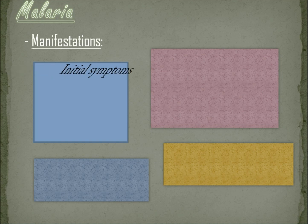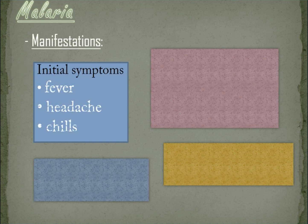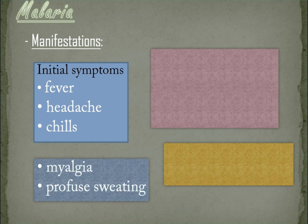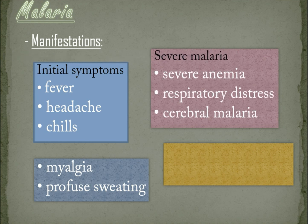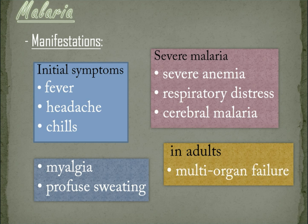Signs and symptoms. The initial symptoms are fever, headache, and chills, followed by myalgia and profuse sweating. Severe malaria frequently develops into severe anemia, respiratory distress, or cerebral malaria. In adults, multi-organ failure is also frequent.